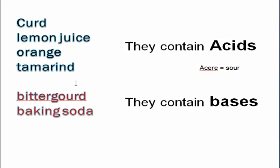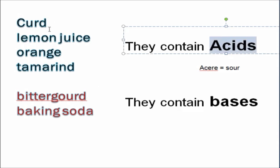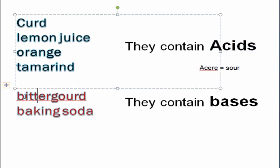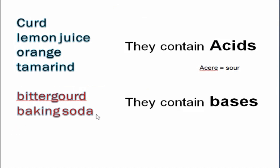These foods have a sour taste because they contain some chemical substances called acids. The word 'acid' is taken from a word which means sour. That is why foods containing acids have a sour taste.